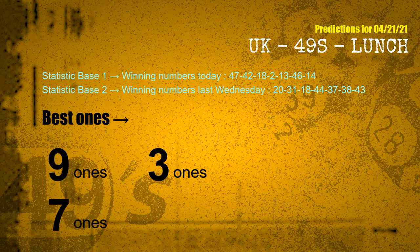According to the statistics above, with winning numbers today — 47, 42, 18, 02, 13, 46, 14 — and winning numbers last Wednesday — 20, 31, 18, 44, 37, 38, 43 — the frequent following ones are 9 ones, 3 ones, 3 ones, and 7 ones.